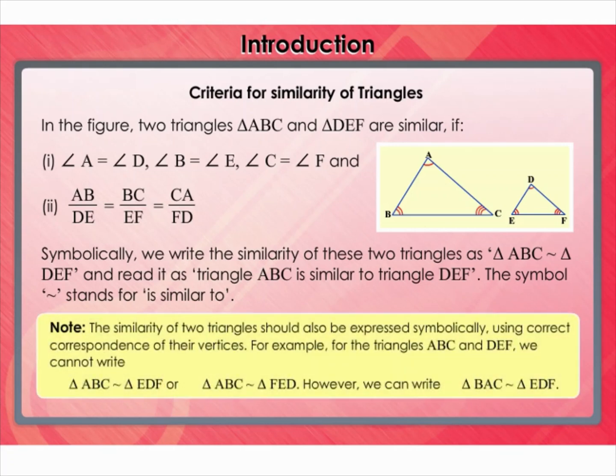Note: The similarity of two triangles should also be expressed symbolically using correct correspondence of their vertices. For example, for triangles ABC and DEF, we cannot write triangle ABC similar to triangle EDF or triangle ABC similar to triangle FED. However, we can write triangle BAC similar to triangle EDF.